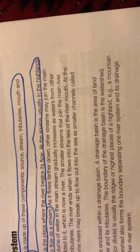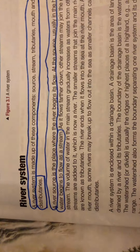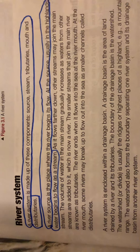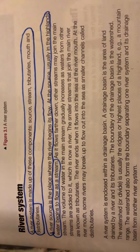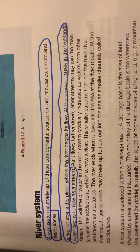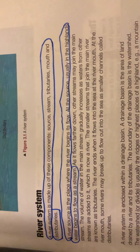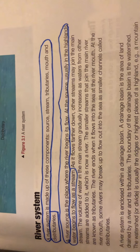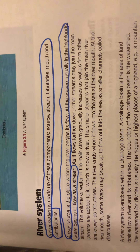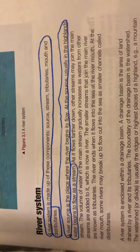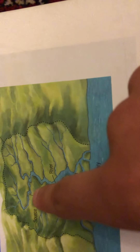As it flows further down, other streams may join the main stream. The volume of water in the main stream gradually increases as water from streams are added to it, which is now a river. The smallest streams that join the main river are known as tributaries. This is a tributary example.